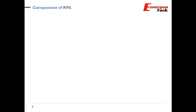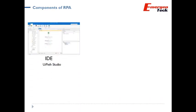Let's get started and understand the different components of RPA. Typically, there are three components of RPA. Number one is IDE — that is Integrated Development Environment — called UiPath Studio. UiPath Studio is the place where most of the time, about 80% of the time, we would be spending building, developing, and automating our processes. This is the very core and important component of overall RPA automation.